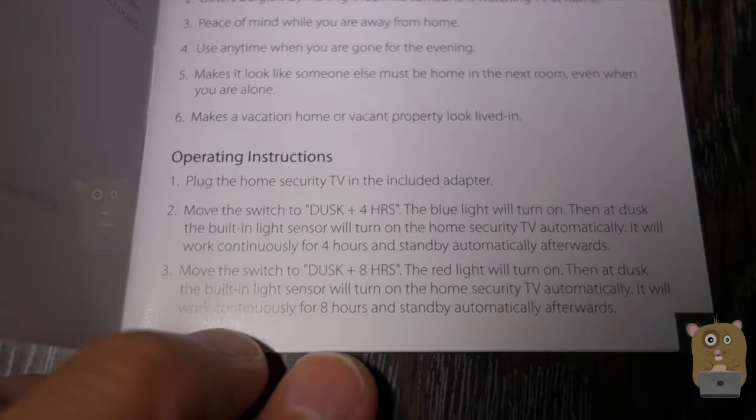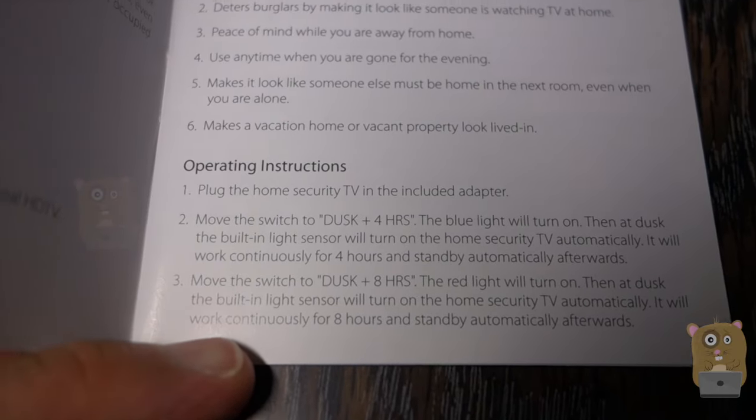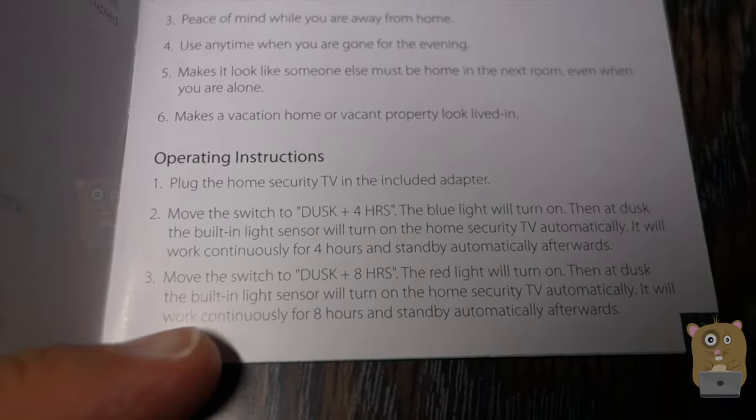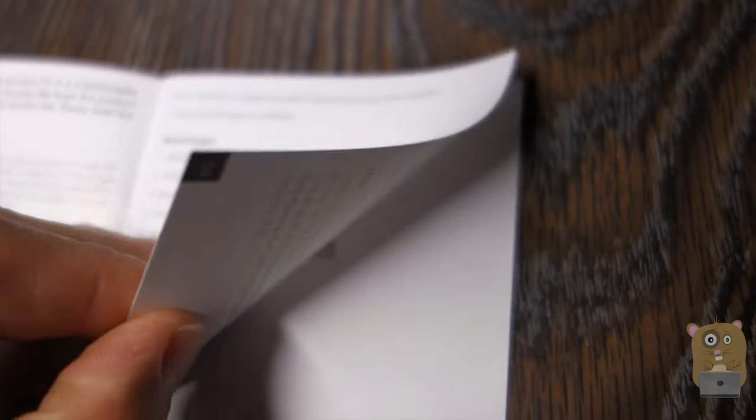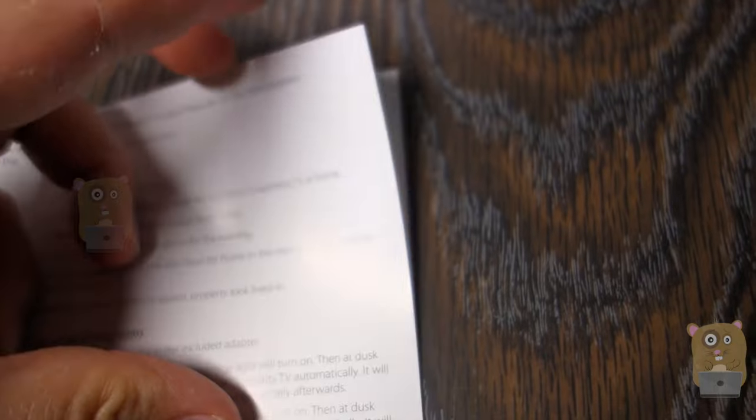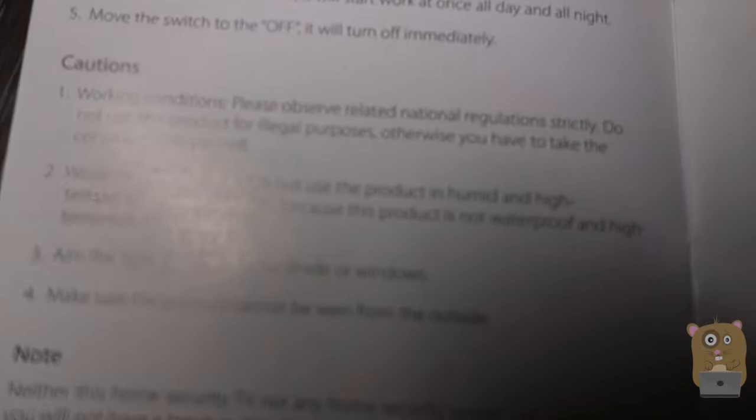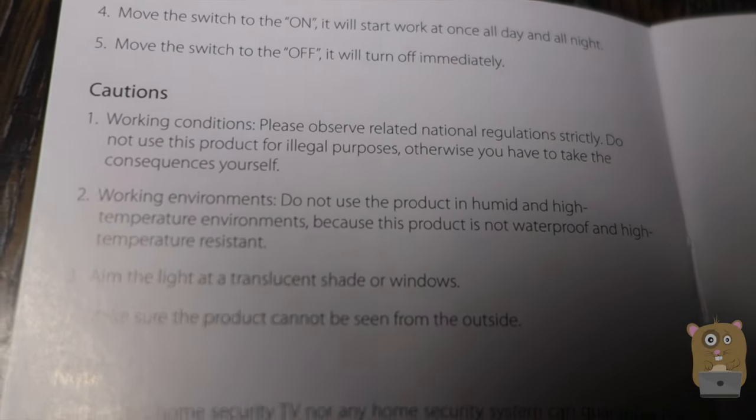Here's the dusk mode. You can set it to either, once it's dusk, power on for four hours or power on for eight hours. Then the third mode is to have it constantly on. And here's the actual TV light.